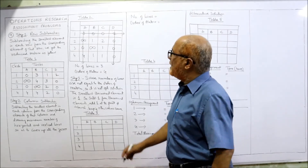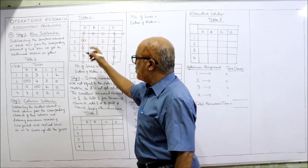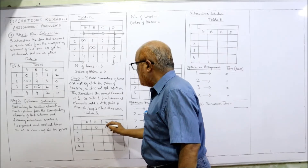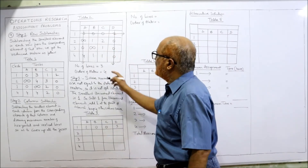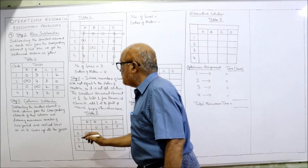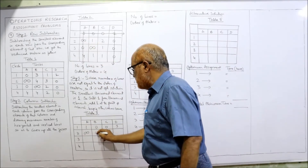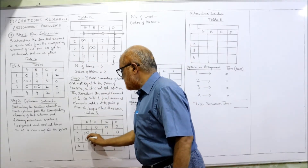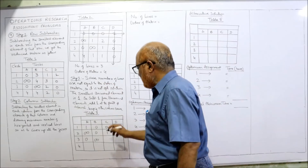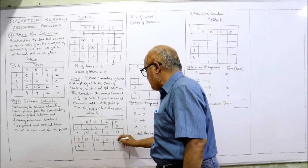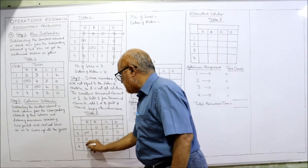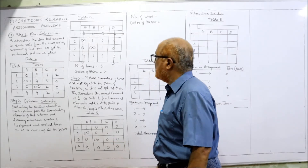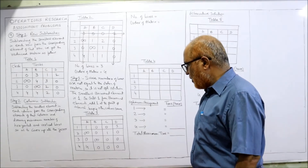Since 1 is the minimum, subtracting 1 from uncovered elements: intersection points get 0+1=1. Covered cells remain the same. In the new matrix: 2 becomes intersection so 2+1=3; restriction unchanged; 1−1=0, 2−1=1; zero covered — same. Restriction unchanged. Then 1−1=0, zero covered, then 4 covered same, 1−1=0, again 1−1=0, and zero covered.